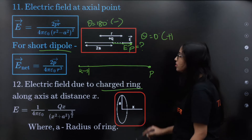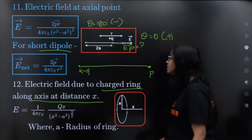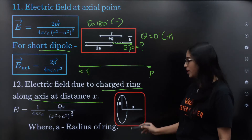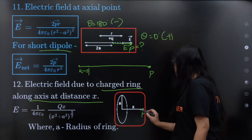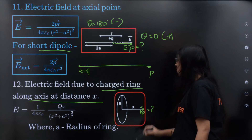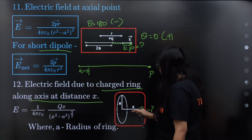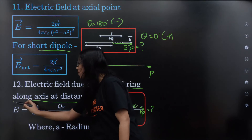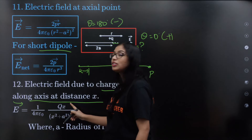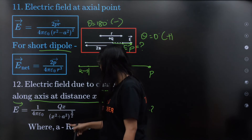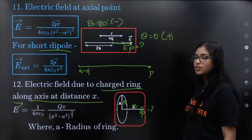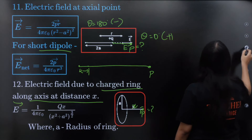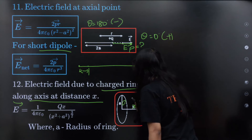Electric field due to a charged ring along the axis at distance x. There is a charged ring; the point P is at distance x along the axis; a is the radius. E equals 1 by 4π epsilon₀ into q·x divided by (x² + a²) whole power 3 by 2. The special case is when x equals a.